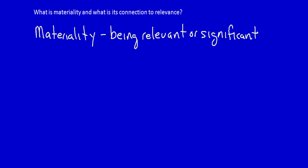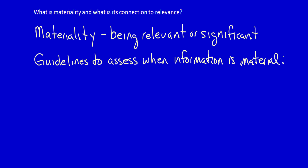Materiality in accounting is defined as a quality of being relevant or significant. It speaks to how important a piece of information is. Therefore, information that is material is relevant because it has the capacity to affect the decisions of the stakeholders. What guidelines are provided in accounting to aid in determining when information is material?